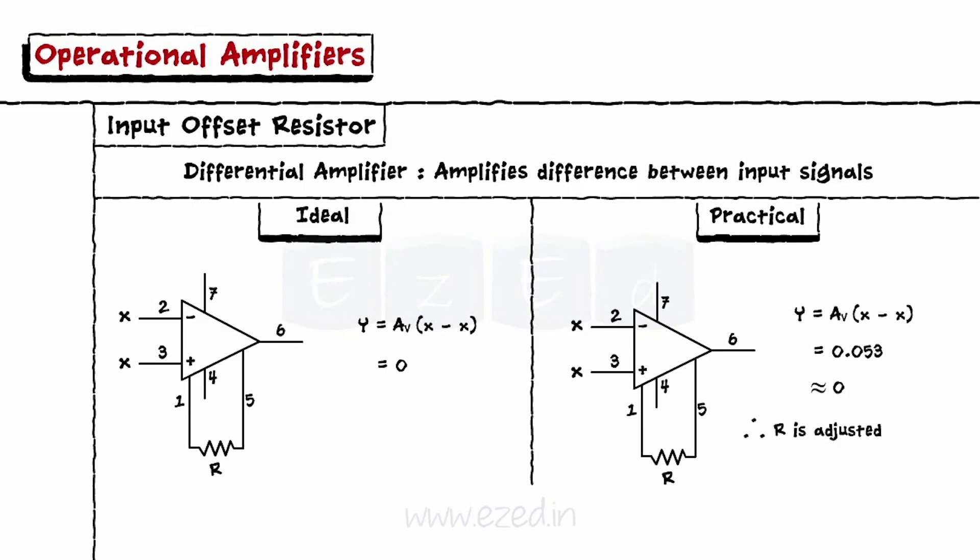We adjust the resistor R in such a way that when the same inputs are applied, the output will be zero. Hence, it is called an input offset resistor.